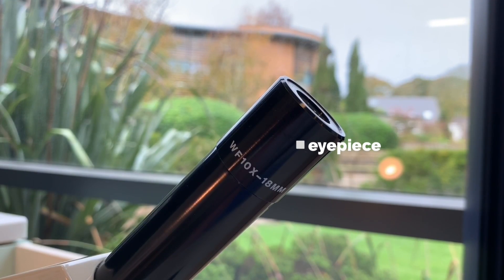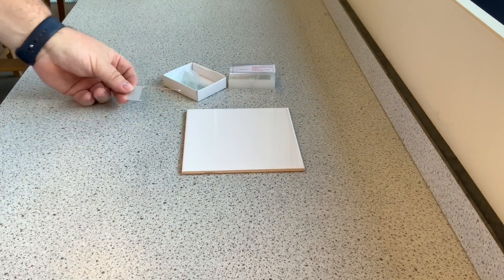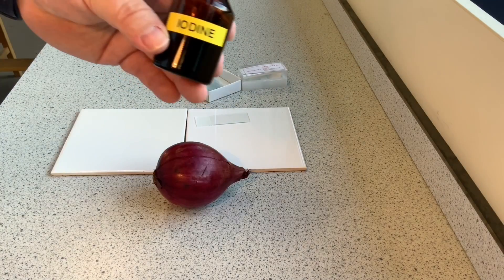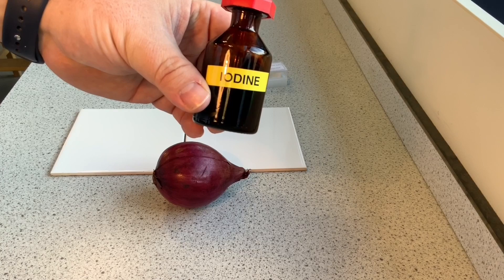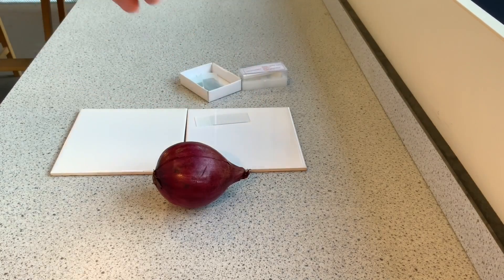Then we have the part we look through which is the eyepiece lens. Let's now have a look at how we can prepare a slide with onion cells. So the equipment we'll need is a glass slide, some iodine to stain the onion cells so we can see the organelles a bit clearer.